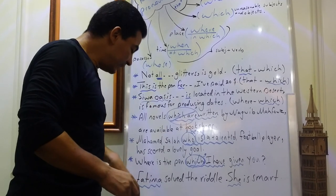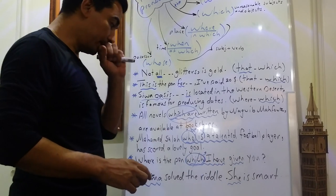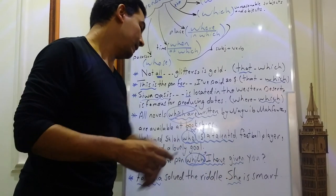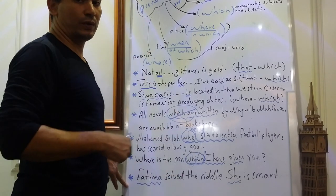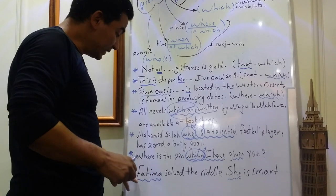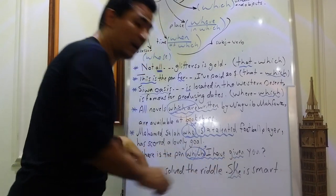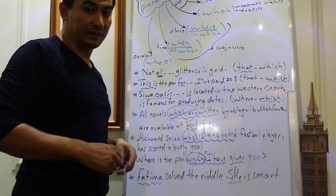The last sentence, Fatima solved the riddle. She is smart. Fatima subject and the subject she. This sentence has two solutions. I can say Fatima, who solved the riddle, comma, is smart. Or Fatima, who is smart, comma, solved the riddle.